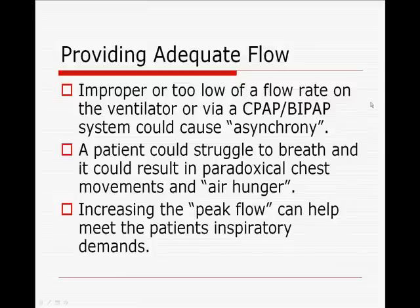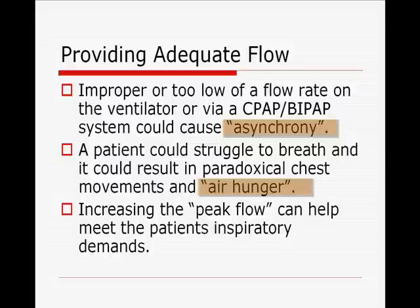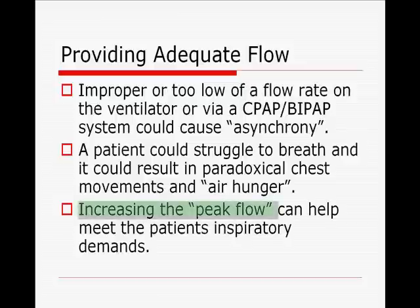The NBRC always focuses on whether or not you're providing adequate flow to a ventilator circuit, a CPAP, or a BiPAP unit. If you have too low a flow set, that could cause asynchrony — the patient could struggle to breathe, resulting in paradoxical chest movements and air hunger. Increasing the peak flow can help meet the person's inspiratory demands. Be aware of signs such as paradoxical chest movement, air hunger, and asynchrony, as these could all indicate too low a flow rate setting on a CPAP mask, BiPAP device, or ventilator in spontaneous mode.